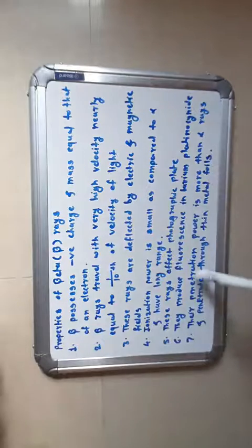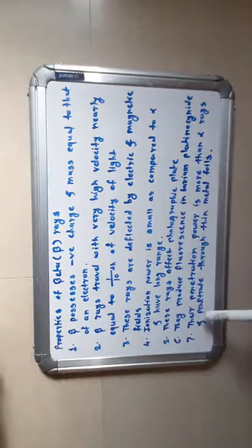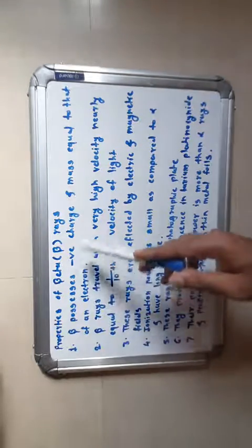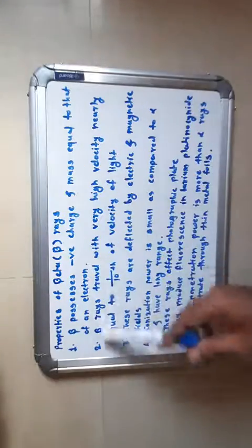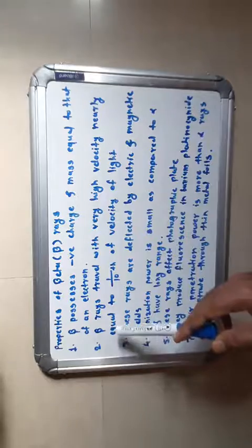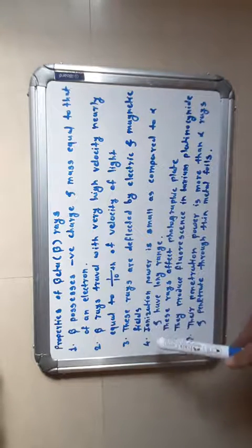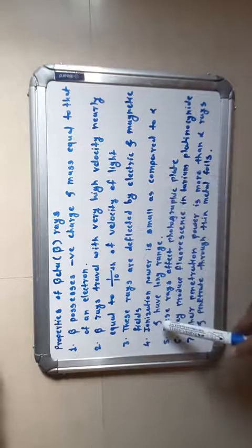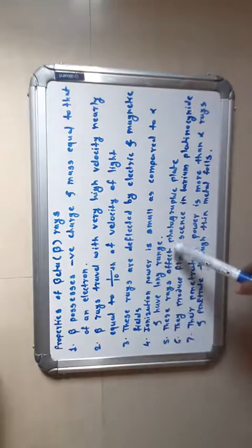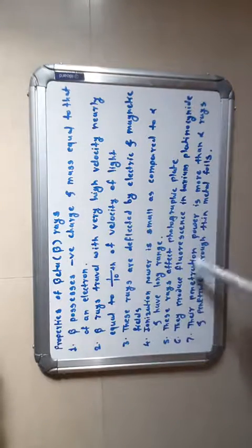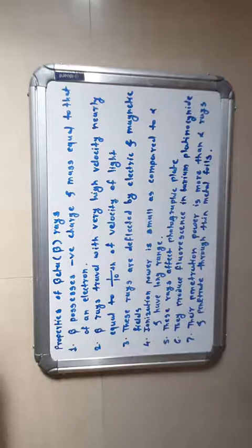Their penetrating power is more than that of alpha rays, and they can penetrate through thin metal foils. In summary, there are seven properties of beta rays: they possess negative charge equal to an electron; travel near one-tenth the speed of light; are deflected by electric and magnetic fields; have small ionization power but long range; affect the photographic plate; produce fluorescence; and have greater penetration power than alpha rays.